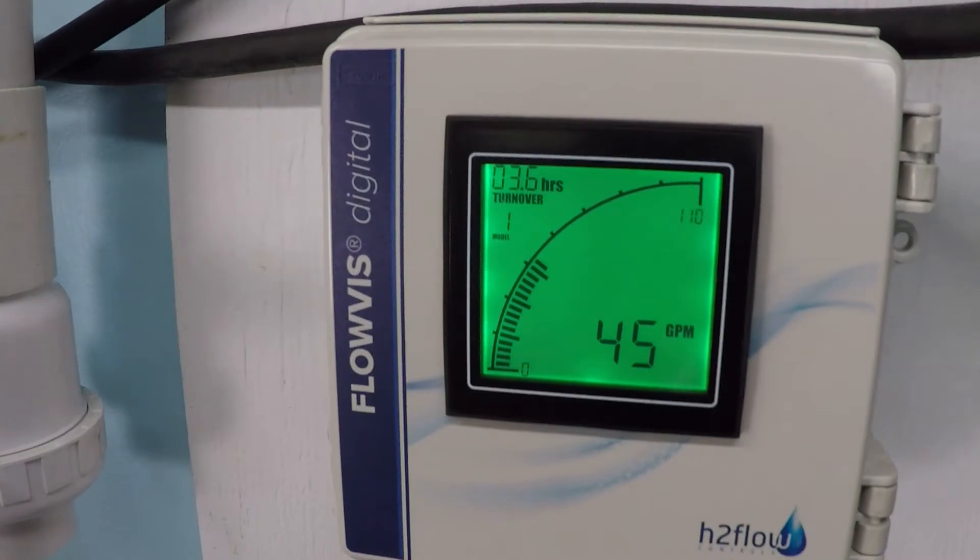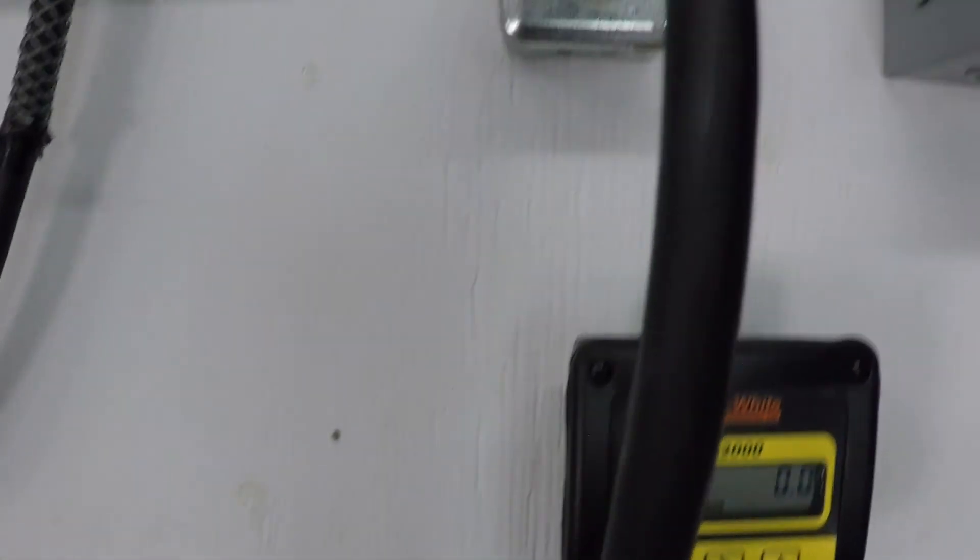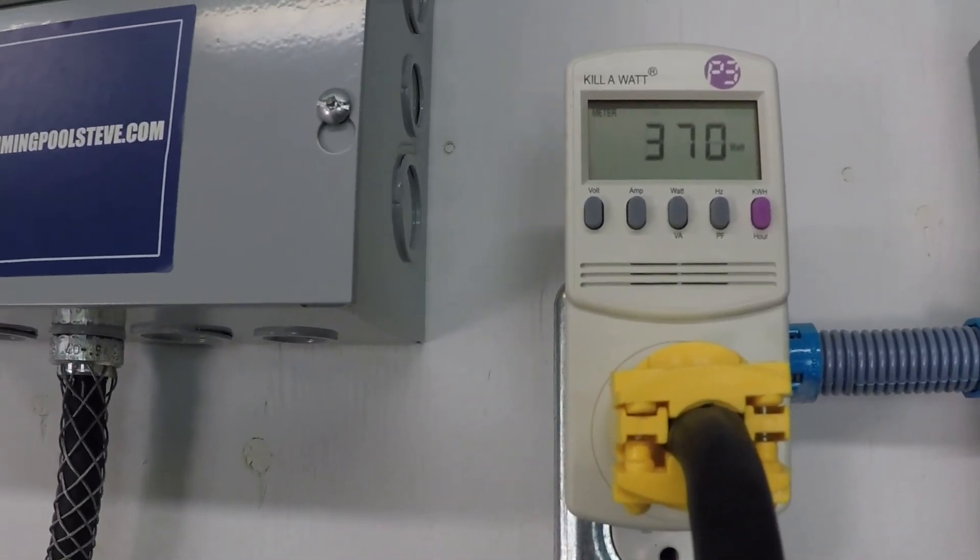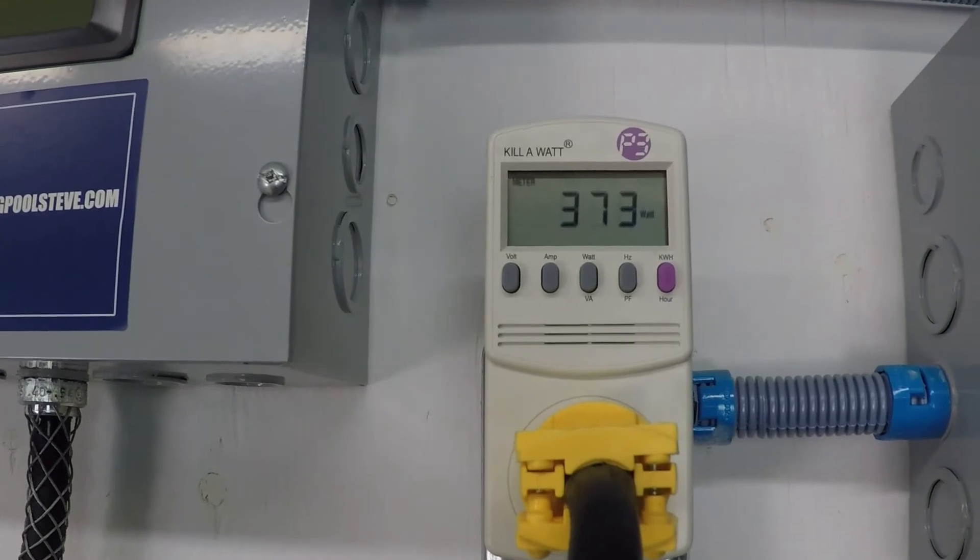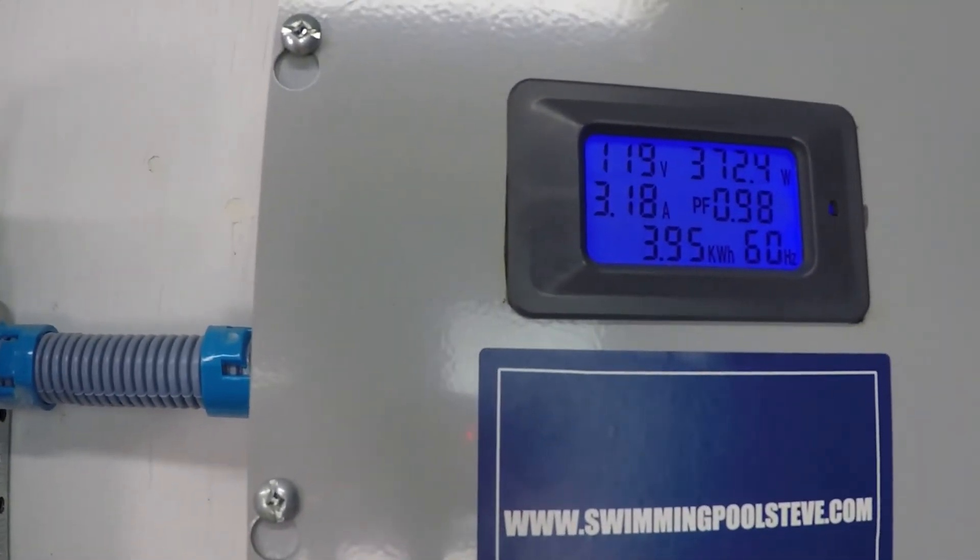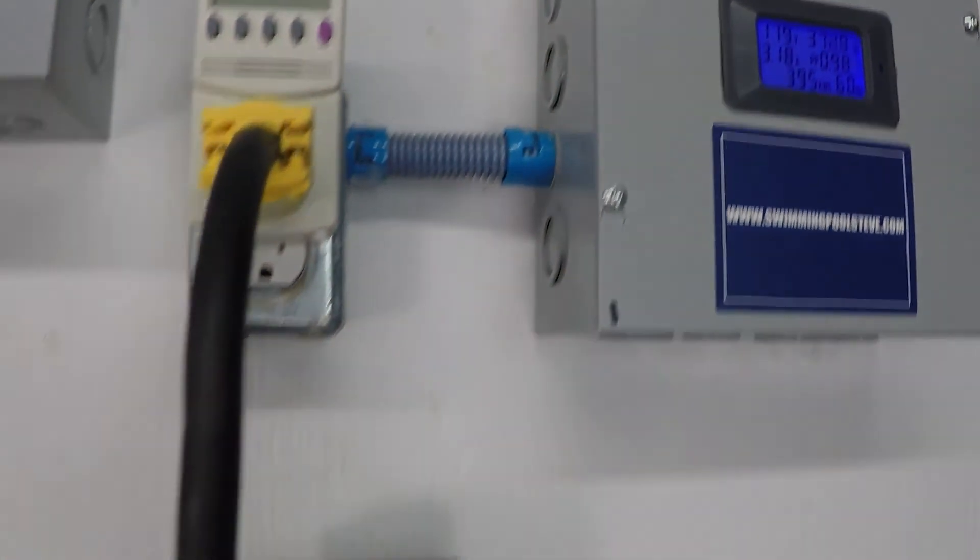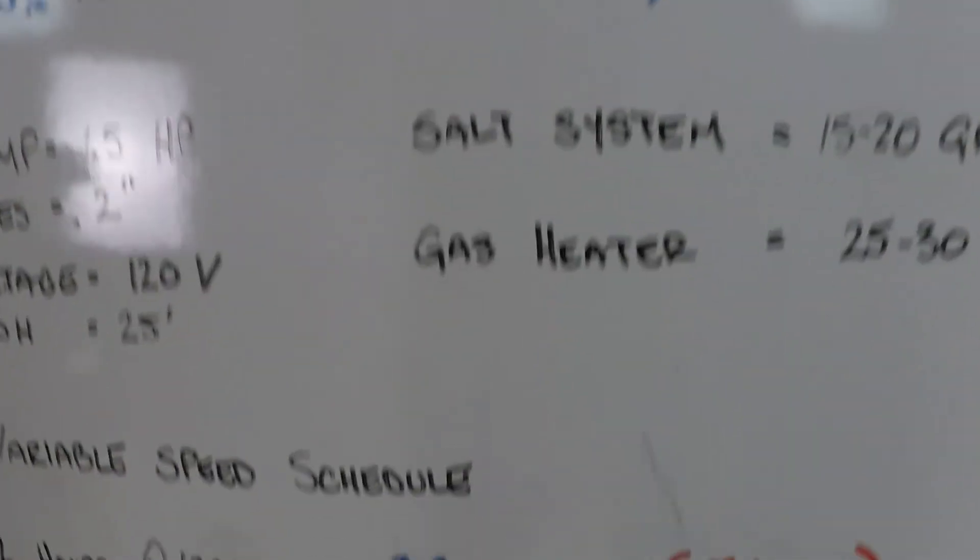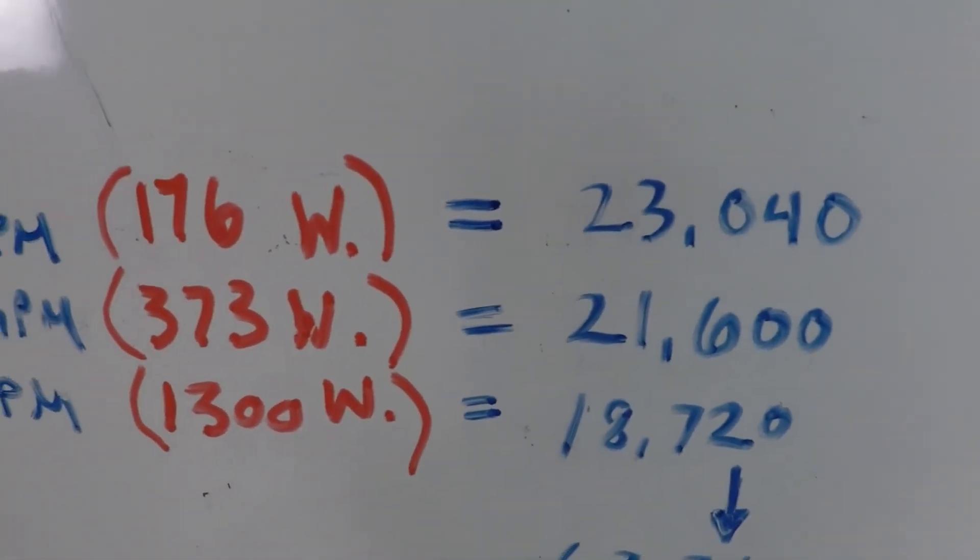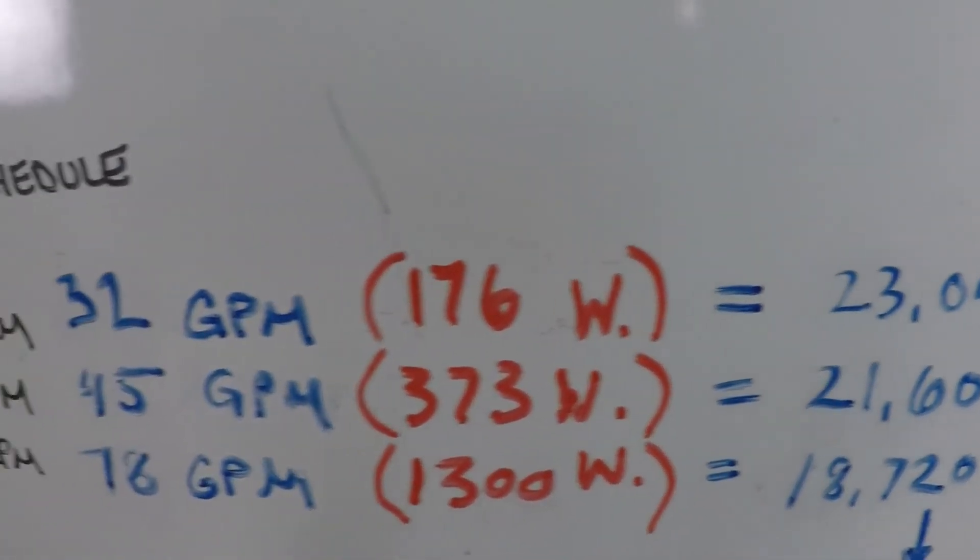And there we go. So 45 gallons per minute. And again, not all that much power consumption. Just a little bit over 370 watts, 373. And over the course of eight hours at 45 gallons per minute, that's going to net us another 21,600 gallons of filtered water.